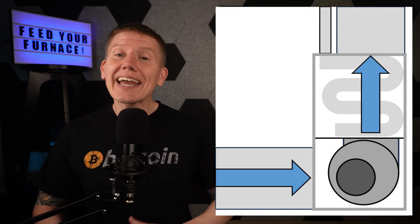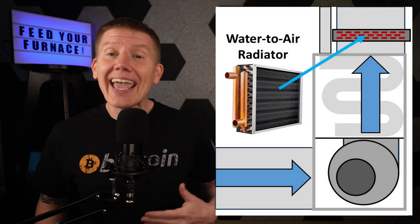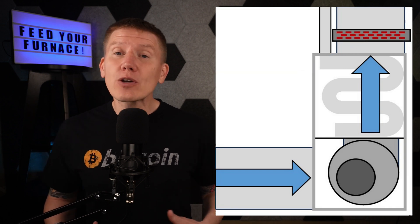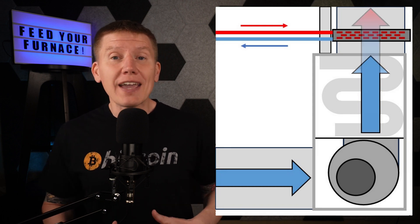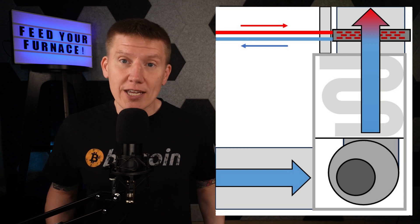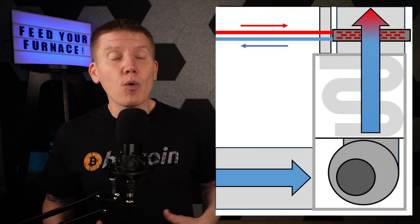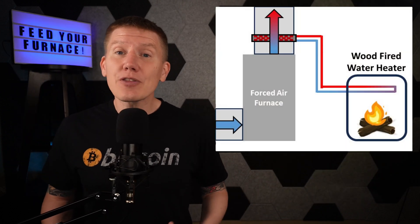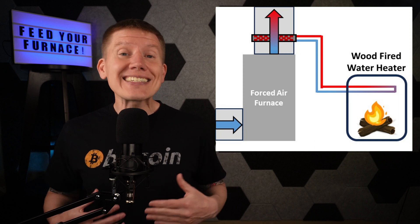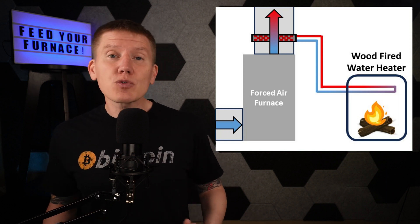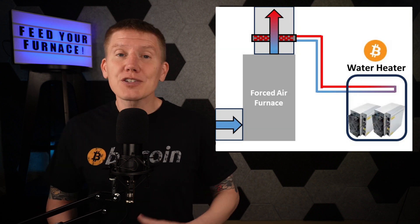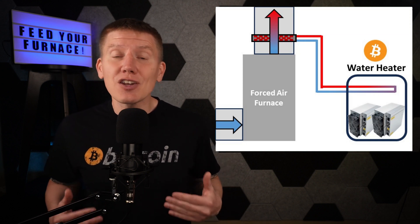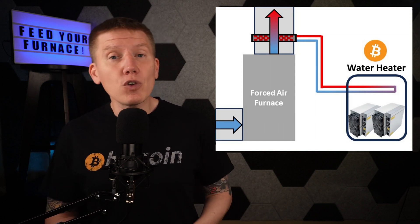The key to heating your house with Bitcoin heat is to take advantage of this fan-only mode. The way this works is to add a water-to-air radiator into the ducting exiting the furnace. The hot fluid from your Bitcoin miner setup is pumped through this radiator, and then the furnace is put into fan-only mode to circulate air through the radiator and around the house. This type of setup is not new — people have been heating their homes with wood-fired water heaters using this same setup for a very long time. We're just replacing the wood-fired water heater with a Bitcoin miner water heater, and all the equipment, accessories, and methods to build these systems is available if you know where to look.